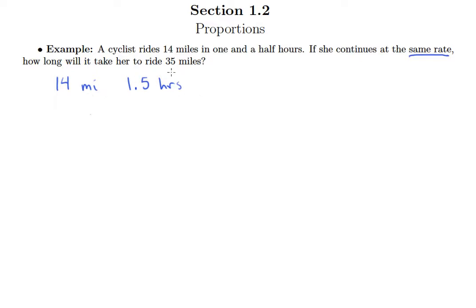Let's understand first what it's asking us. If she continues at the same rate, how long will it take her to ride 35 miles? So what we have here is another set of information: if she goes 35 miles, well we don't know how long it takes her, that's what we want to know. So that's our variable. We have 14 going with 1.5 and then we have 35 going with x.